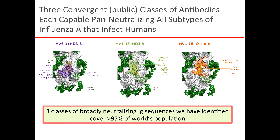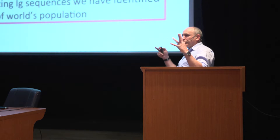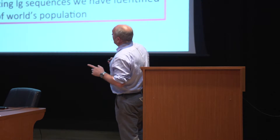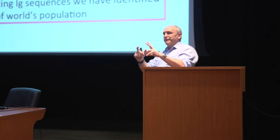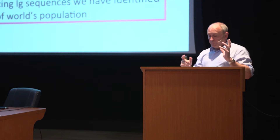We then went on to crystallize these antibodies and identify their footprints. This is the footprint of the three families of genes we found: the class using VH6-1, the class using VH1-18 with a 15 amino acid CDRH3, and the class using VH1-18 with a 21 amino acid CDRH3. We've now identified three classes of broadly neutralizing antibodies directed to the influenza stem. These gene families are present in most of the world's population and cover approximately 95% of it — so if we can design a structure to elicit these antibodies specifically, we have a major component of a universal flu vaccine.